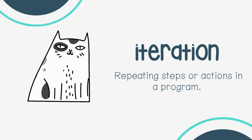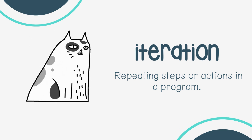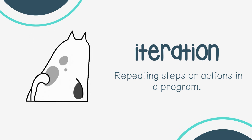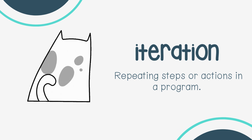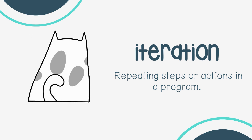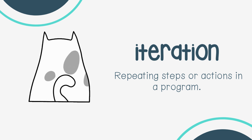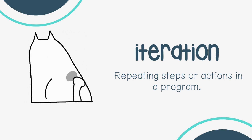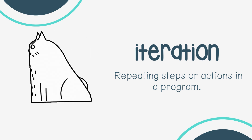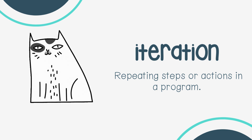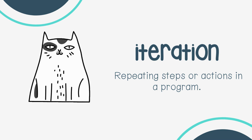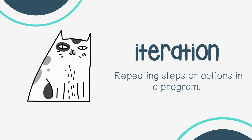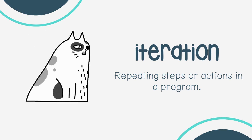Iteration: repeating steps or actions in a program. This is similar to a loop, but as an example with this cat — it's in a loop, but every time it makes one turn, that's called an iteration. So you can count the iterations within the loop.